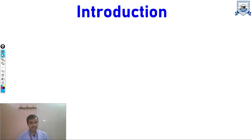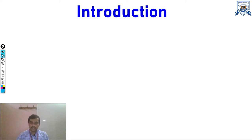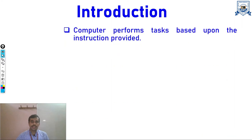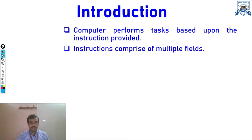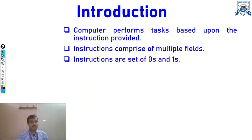Instructions are basically sets of zeros and ones which tell our machine or computer what operation is to be performed on which data. For every task performed in the computer there is some specific instruction which will be provided by the user. These comprise multiple fields and are sets of zeros and ones.